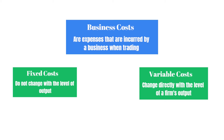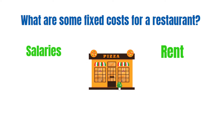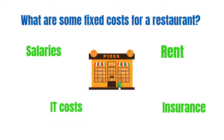Let's take a look at some examples. You can pause the video if you'd like and consider some examples of fixed costs. Rent is a classic example of a fixed cost that you will see quite often in textbooks. Salaries are also a fixed cost — they will not change with the level of output. Insurance is also a fixed cost, as are IT costs such as maintenance of a website.